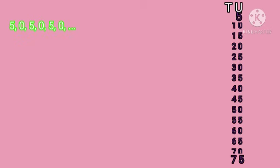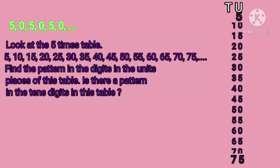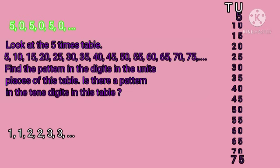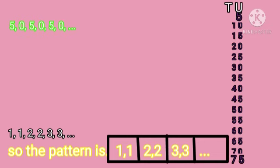Next, we have to see the pattern in the tens place. In 5×1=5, there is nothing in the tens place, so 0. In 5×2=10 and 5×3=15, the tens digit is 1, then 1. In 5×4=20 and 5×5=25, the tens digit is 2, then 2. In 5×6=30 and 5×7=35, the tens digit is 3, then 3. So the pattern in the tens place is: 0, 0, 1, 1, 2, 2, 3, 3 and so on.